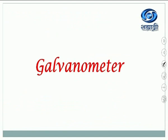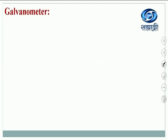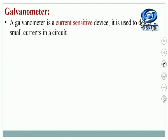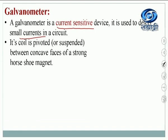The next part we shall study is the galvanometer. A galvanometer is a current sensitive device used to detect and measure small currents in a circuit. Its coil is either pivoted or suspended — there are two types: pivoted coil type and suspended coil type.